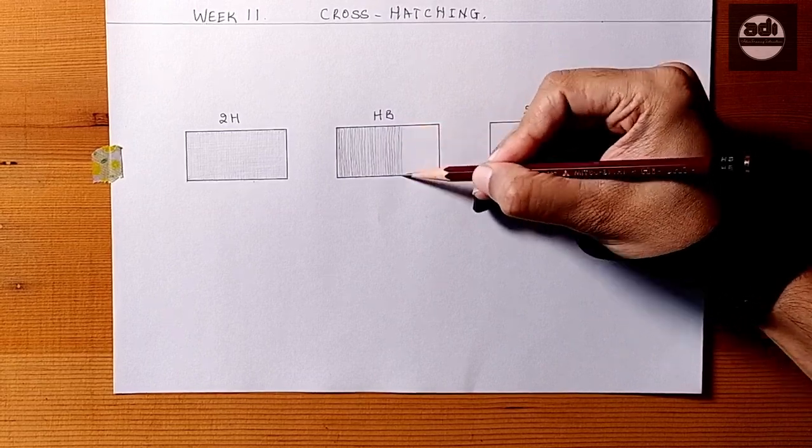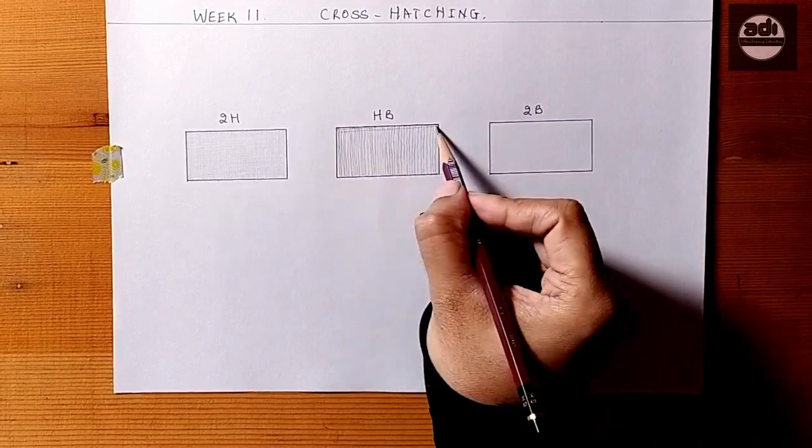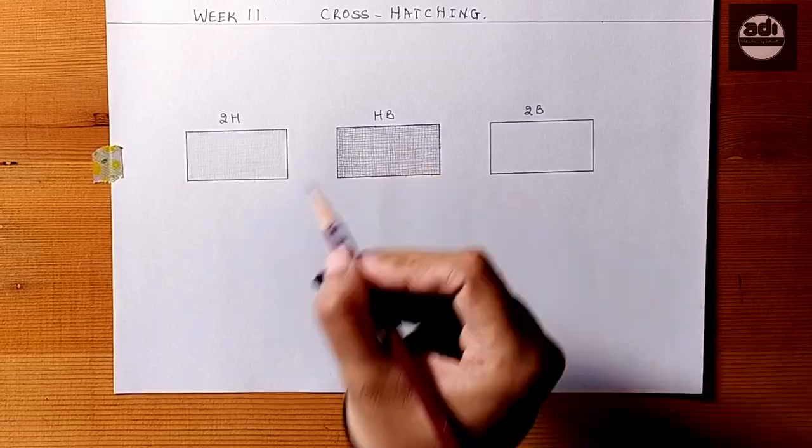To start with, keep the cross hatch marks perpendicular to each other. Also try to get different tones on different days using different pencil grades.